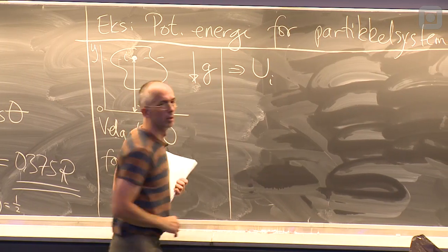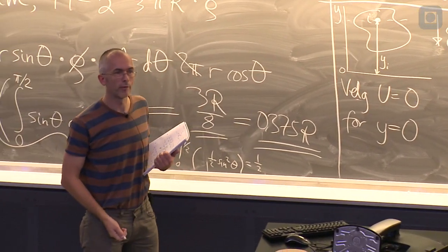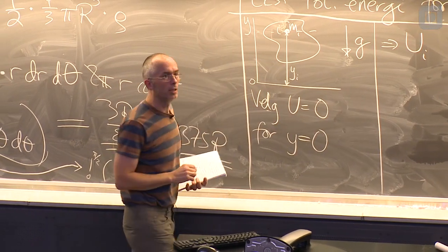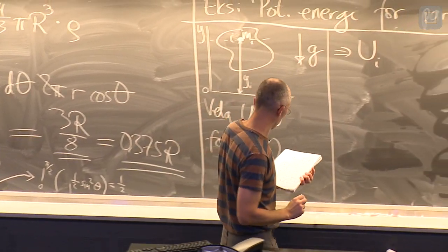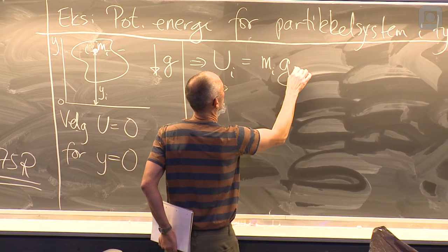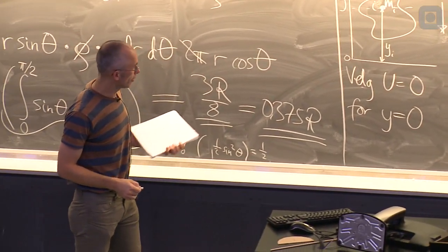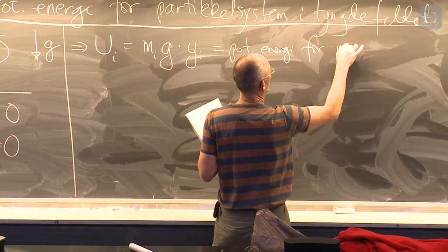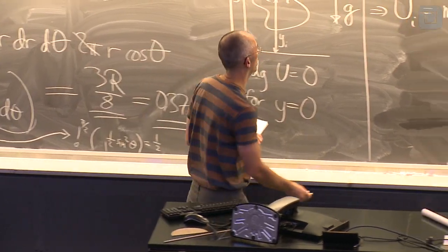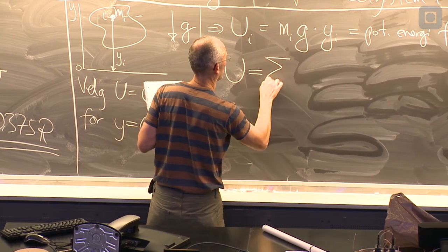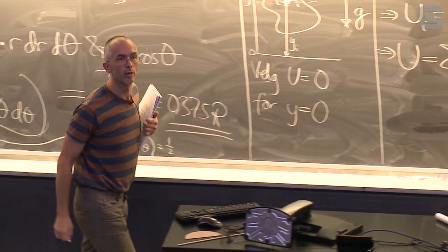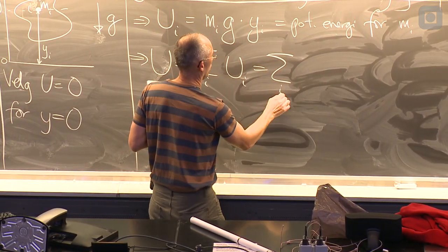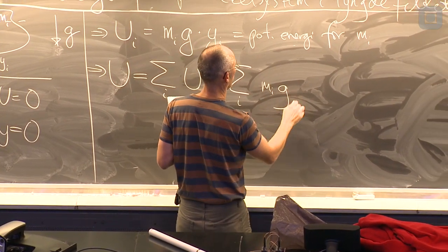Da kan vi skrive opp, og da husker vi det eksempelet vi har regnet for en uke eller to siden. Potensielle energi for massen mi, når den er i høyden yi. Den må bli tyngden gange høyden. Det har vi vist tidligere. Så det er altså den potensielle energien for en av massene som inngår i systemet. Den totale potensielle energien vil da være gitt ved summen av potensielle energi for hver enkel partikel som inngår. Det vil si, summen over alle partikler i systemet, masse gange tyngdenakselerasjon gange posisjon.